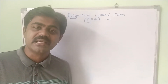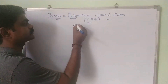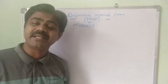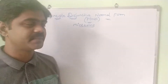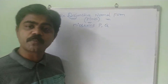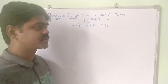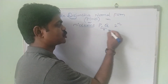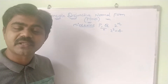PDNF is a group of minterms. For example, if I have two propositions or two variables P and Q, then I need 2^n minterms. With two variables, 2^2 = 4 minterms are needed.